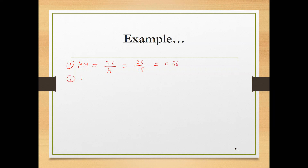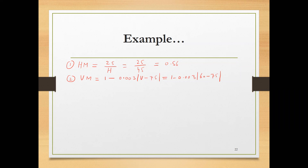The second multiplier is VM, the vertical multiplier. That depends on vertical distance and is equal to 1 minus 0.003 times the absolute value of V minus 75. V is 60, so that is 1 minus 0.003 times |60 minus 75|, which equals 0.955.